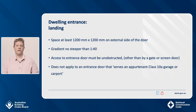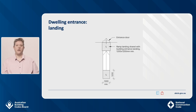The entrance door must have a clear space of at least 1200 mm by 1200 mm on the external side of the door, with a gradient no steeper than 1 in 40. Access to this door must be unobstructed other than by a gate or screen door. However, Clause 2.3 does not apply to an entrance door that serves an appurtenant Class 10a garage or carport. This means that where the step-free access path is provided from the garage or carport, the 1200 mm by 1200 mm landing area is not required. A landing provided at one end of a ramp may also be counted as a landing for the purpose of the dwelling entrance requirements.